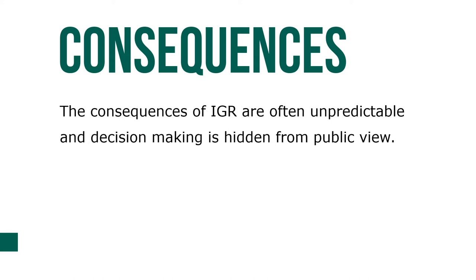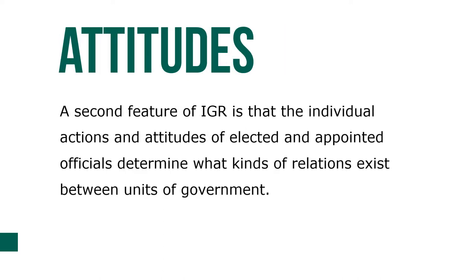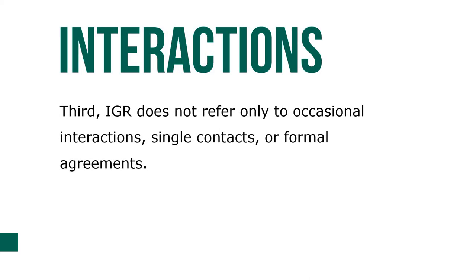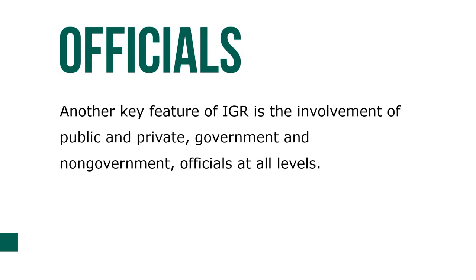The consequences of IGR are often unpredictable and decision making is hidden from public view. A second feature of IGR is that the individual actions and attitudes of elected and appointed officials determine what kinds of relations exist between units of government. Third, IGR does not refer only to occasional interactions, single contacts, or formal agreements. Another key feature is the involvement of public and private, government and non-government officials at all levels.